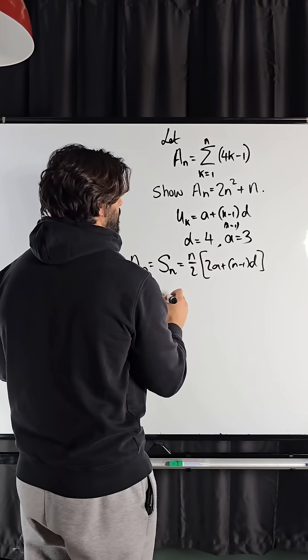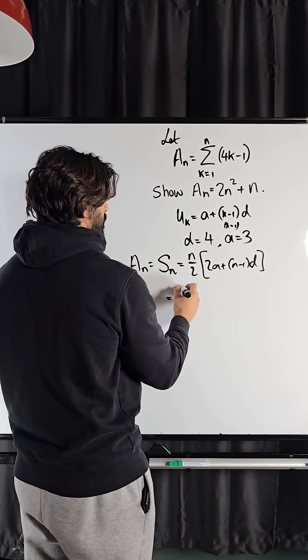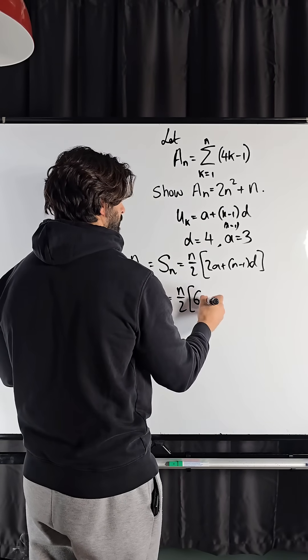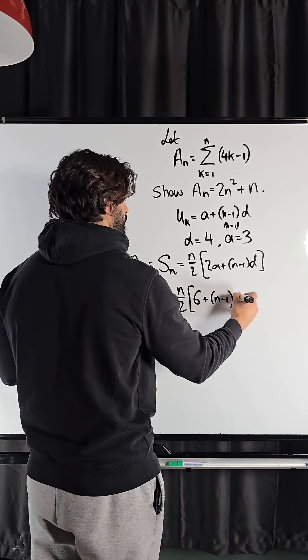Which is n over 2, 2a is 2 times 3, 6 plus n minus 1, d is 4.